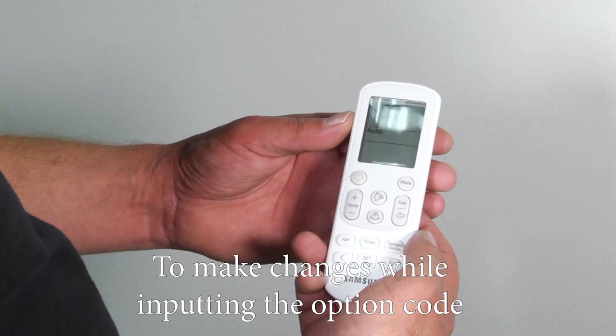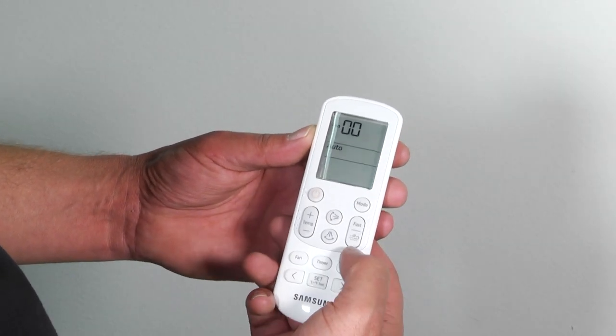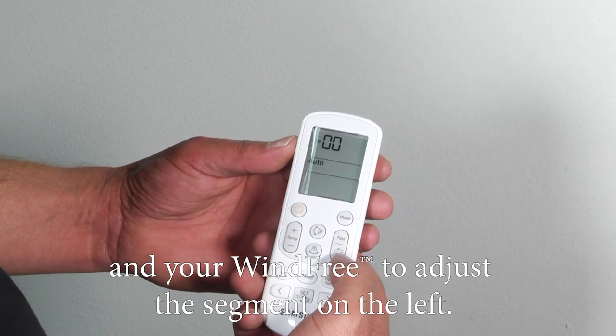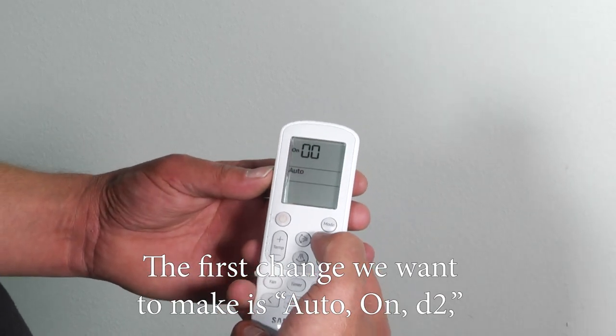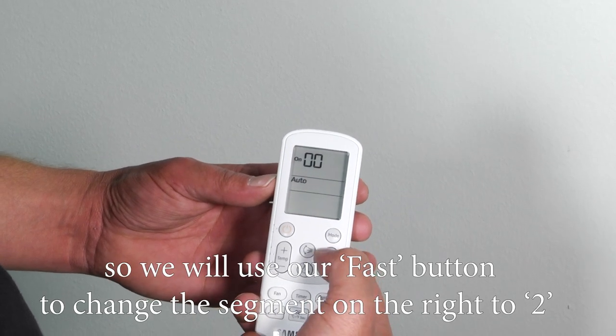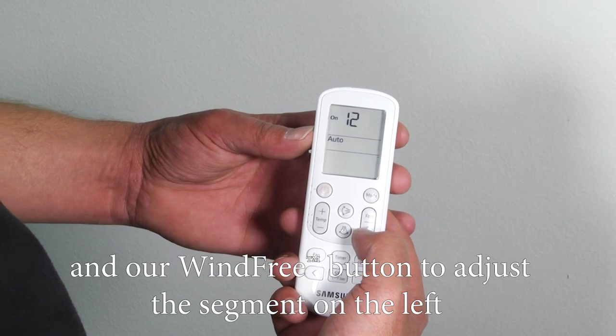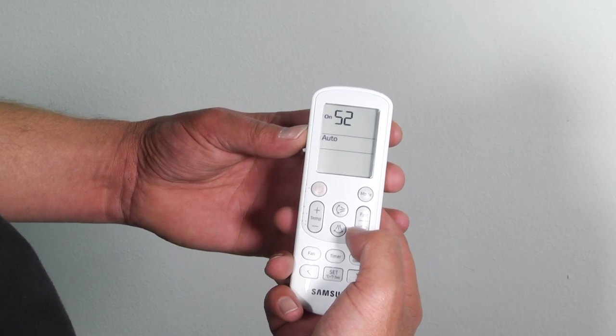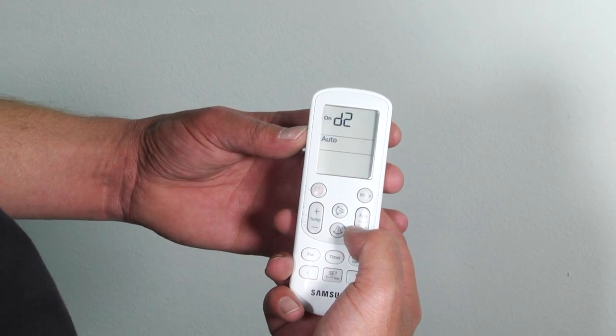To make changes while inputting the option code, you'll use your fast to adjust the segment on the right and your win free to adjust the segment on the left. The first change that we want to make is auto on D2. So we'll use our fast button to change the segment on the right to two and our win free button to adjust the segment on the left to change to D.